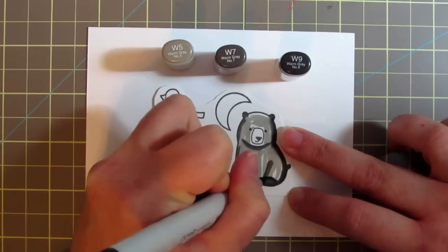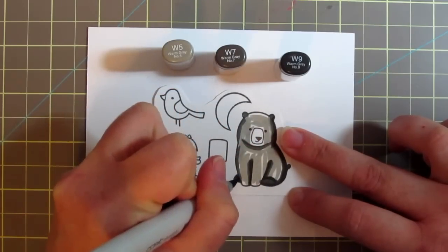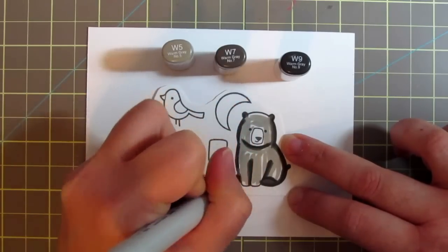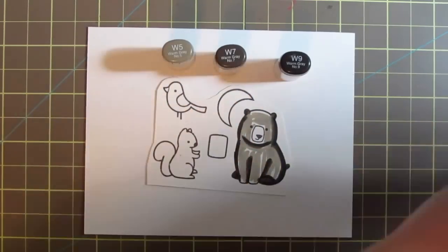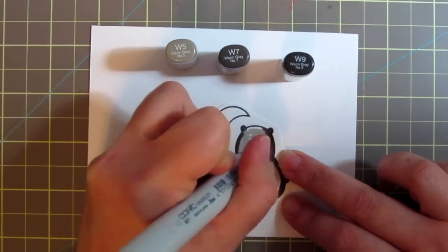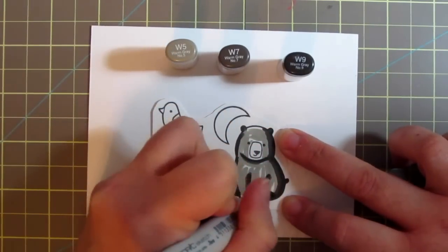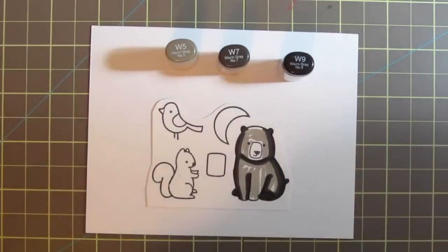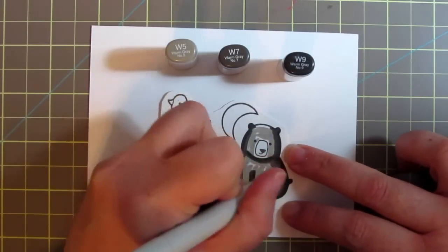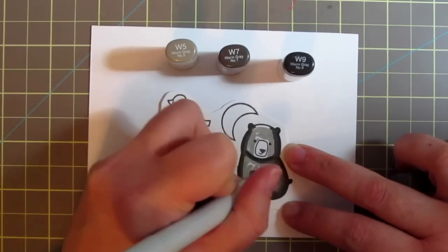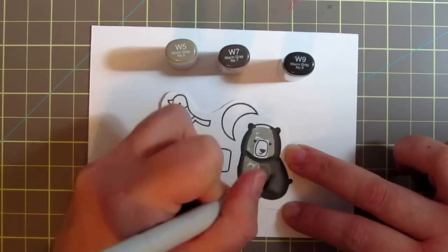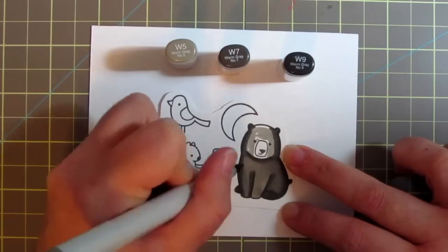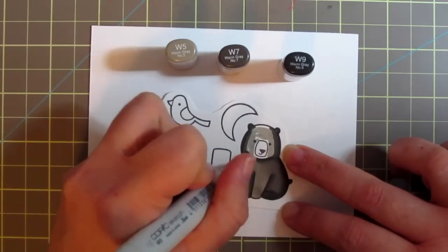I'm going to go in with my W9 and deepen those along the edges. I like to work lightest to darkest when I have larger images. I do sometimes work darkest to lightest if it's a small image, and that's just so that you don't oversaturate the paper. But this bear is plenty big to be able to work up in layers, and building in layers is going to give you a really smooth transition between your coloring.